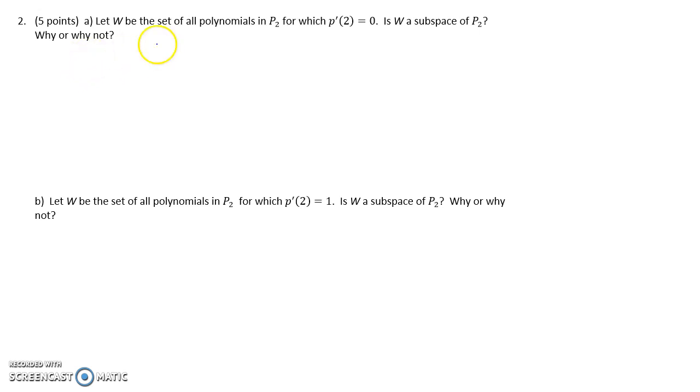So in part A, W is the set of polynomials of degree 2 or less, since it's P2, for which the derivative of P at 2 is 0. And so we're supposed to verify whether this is a subspace. Remember, if we know that we're dealing with a subset of a vector space, which P2 is one of our standard vector spaces, and here we're looking specifically at the subset of polynomials whose derivative at 2 is 0.